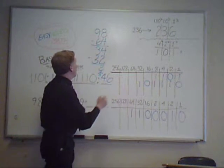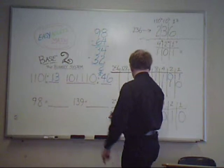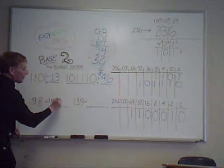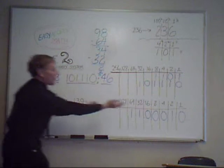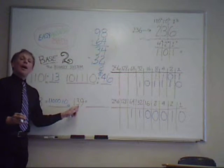And, there's nothing left. So, I put a 0 in all the remaining columns. Which is the 1's column. So, in base 2, 98 is 1, 1, 0, 0, 0, 1, 0. The number I got from the chart. Why don't you try 139?